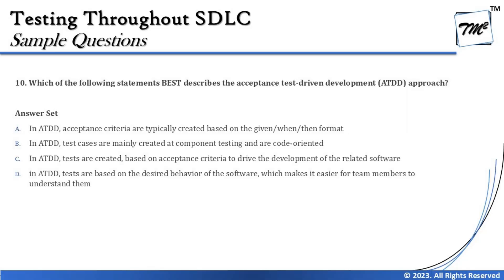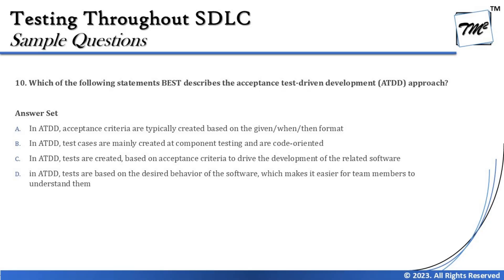Option A says: in ATDD, acceptance criteria are typically created based on the given-when-then format. ATDD acceptance criteria following a given-when-then format is true from chapter 4.5, but the question is whether writing acceptance criteria in this format is what we call ATDD. That's a question mark — we'll keep this on hold and check the other options.